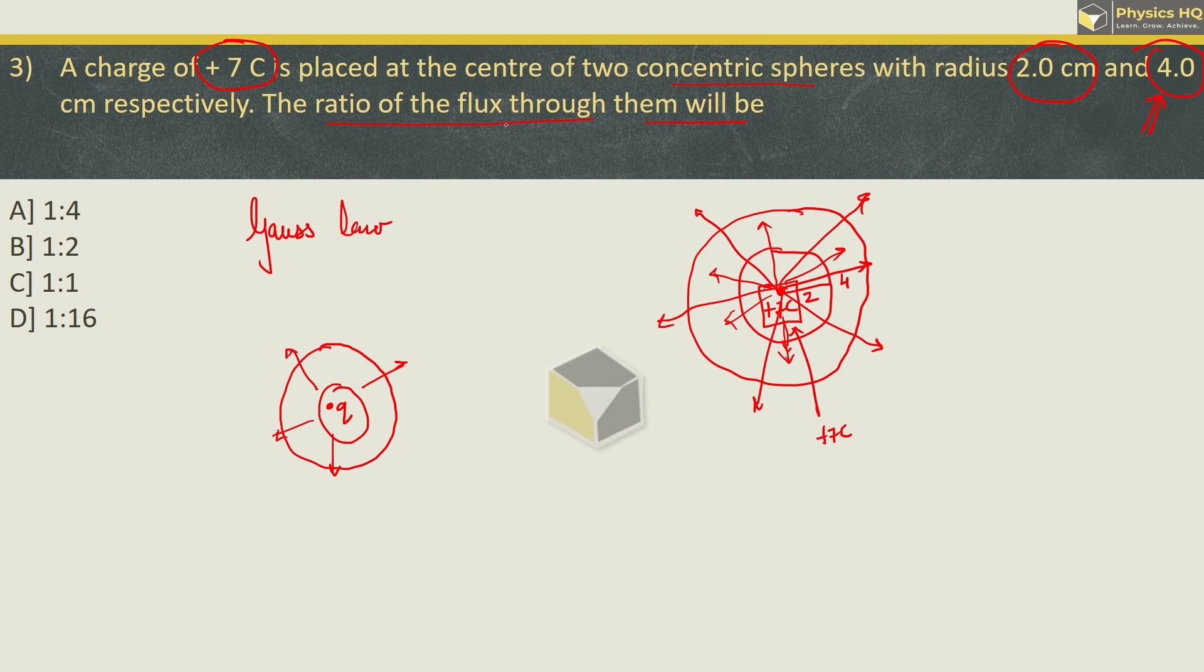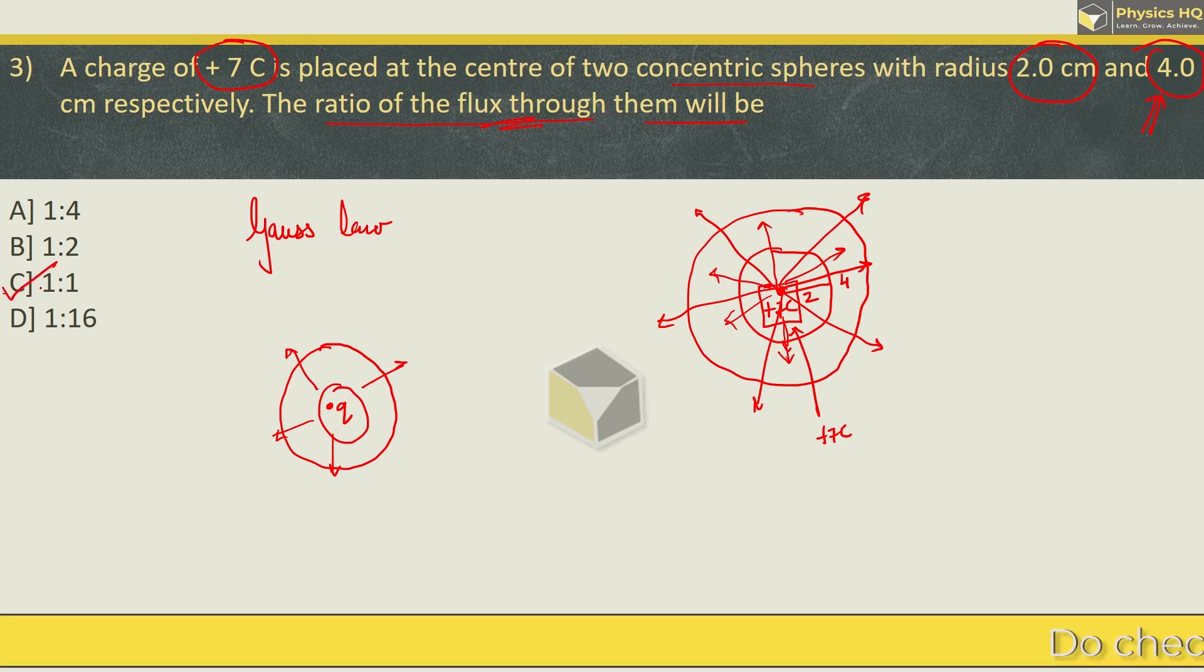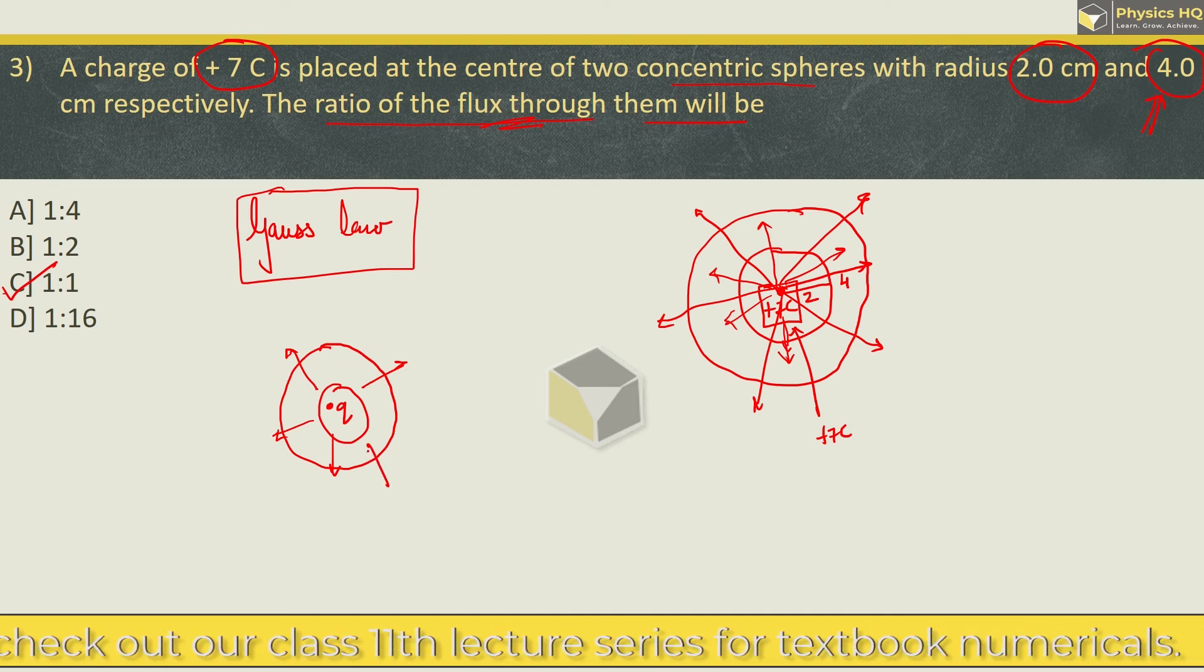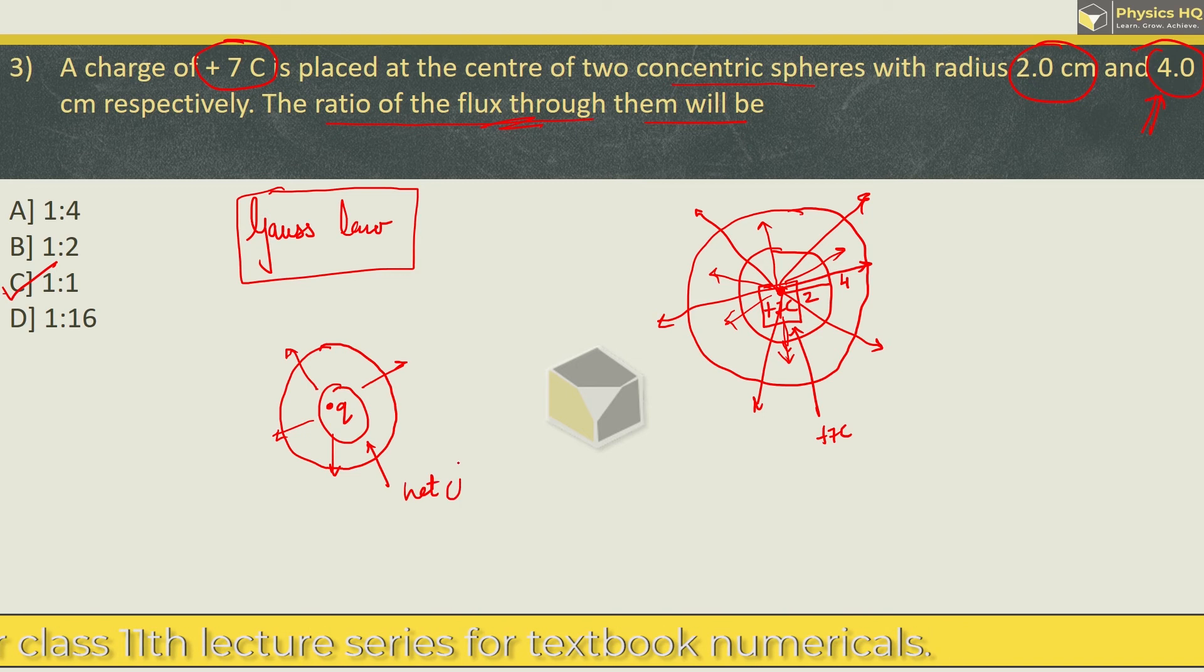Therefore, the ratio of flux which is coming out will be in the ratio of 1 is to 1. Please remember this. Gauss's law. The amount of flux that passes through an enclosed surface will depend upon the net charge which is present inside that surface.